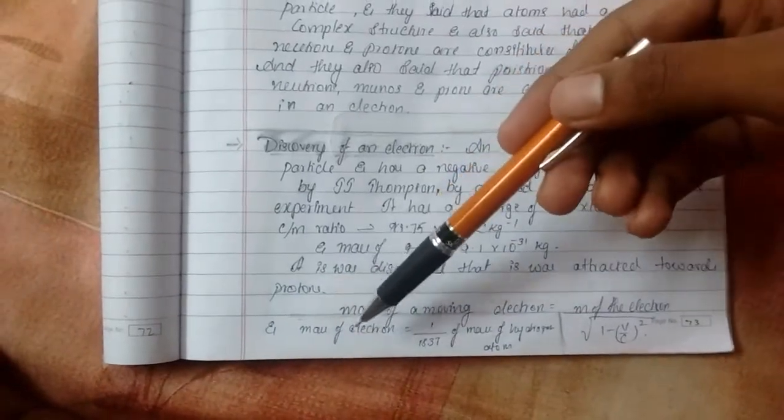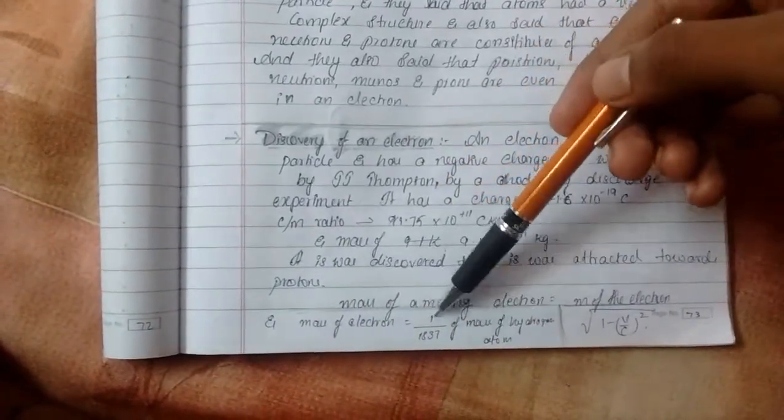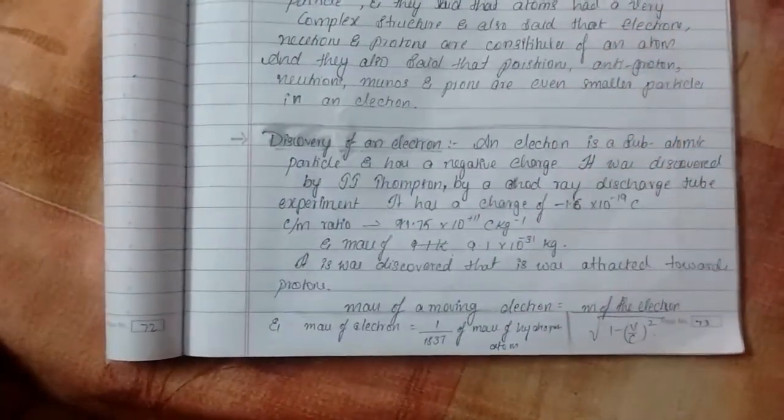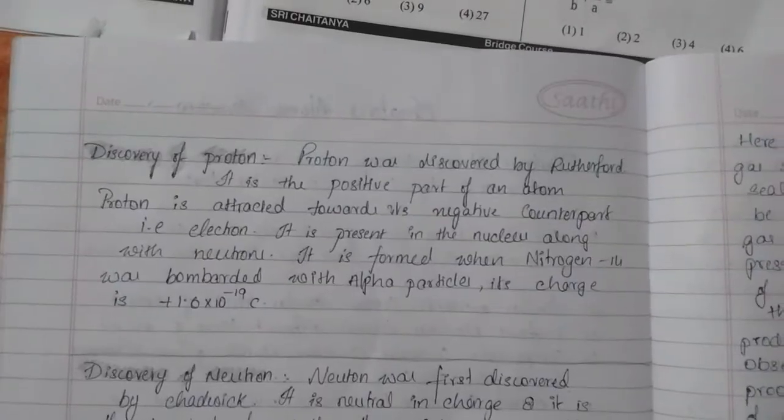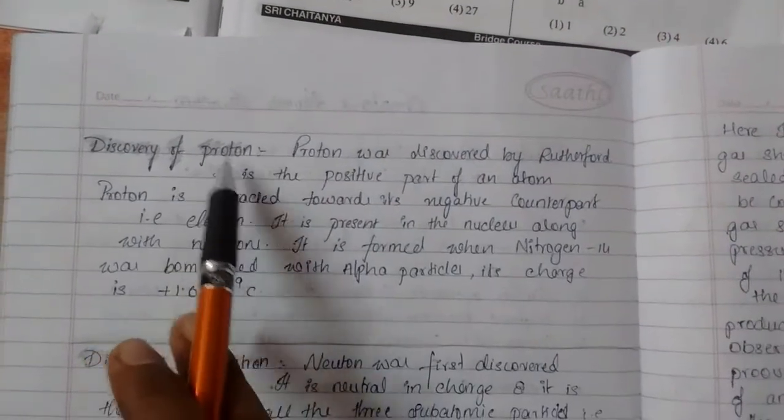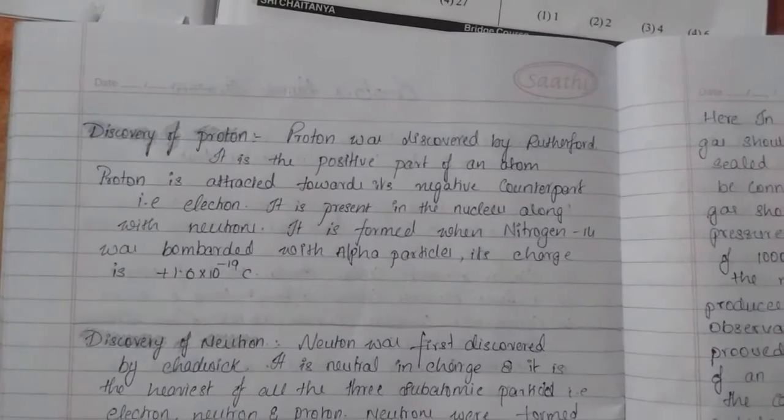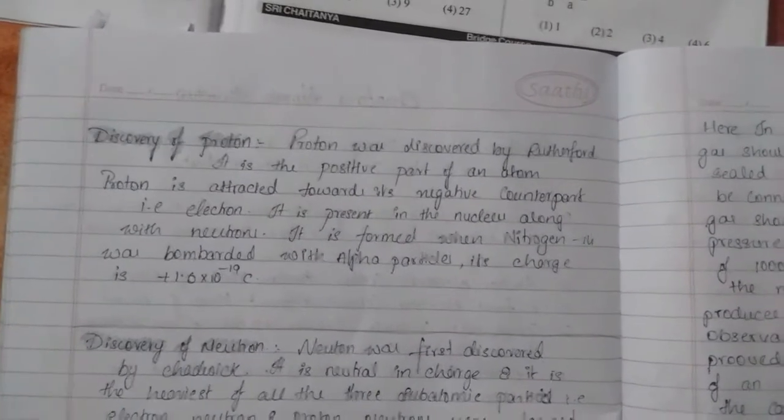And an important note point here is mass of an electron equal to 1 by 1837th times of the mass of a hydrogen atom. Then Rutherford discovered the discovery of proton and it was a positive part of an atom and proton is attracted towards the negative counterpart, that is electron.